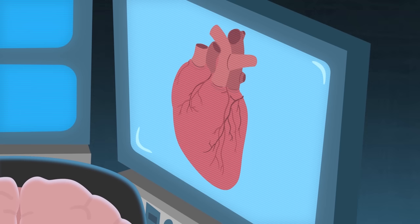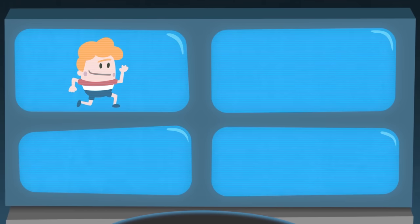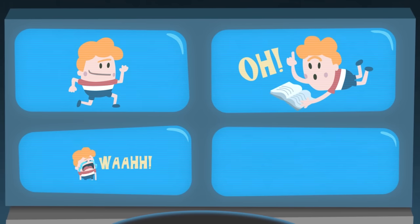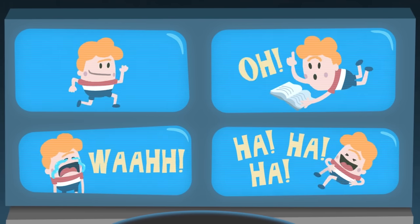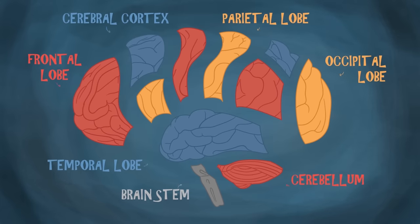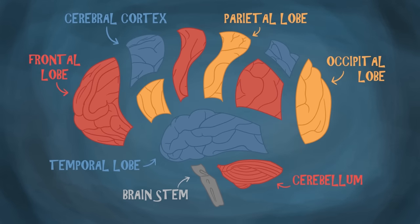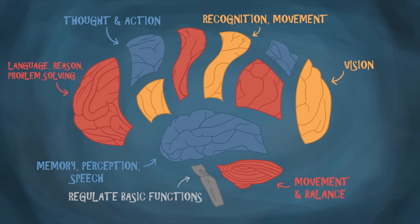It keeps a regular heartbeat and enables you to run and play, learn new facts and ideas, and feel a wide range of emotions. To do all of these jobs, your brain contains many different parts, each focused on a specific function.